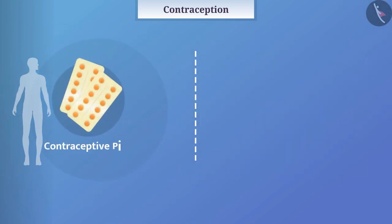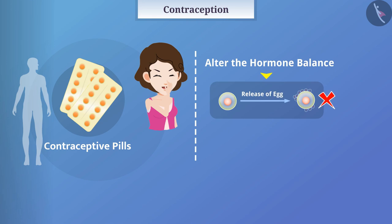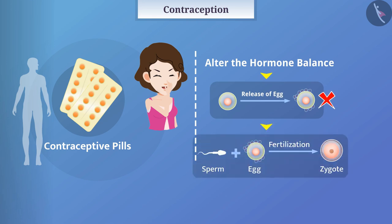Contraceptive pills are medicines consumed by women that alter the hormone balance. This does not lead to release of an egg, and hence there is no possibility of fertilization. They may also have some side effects.